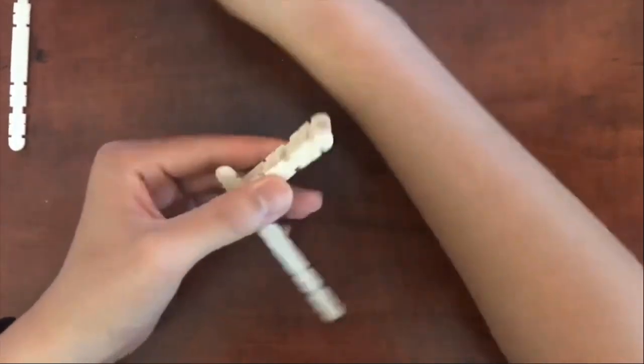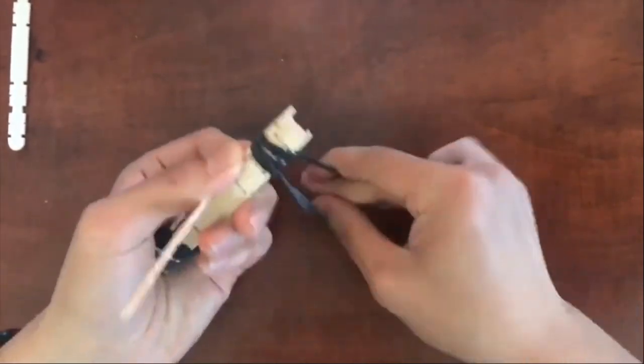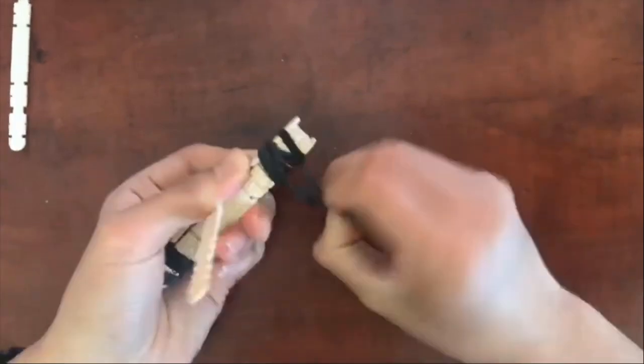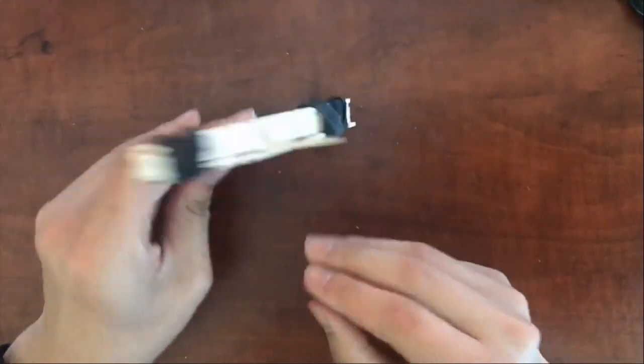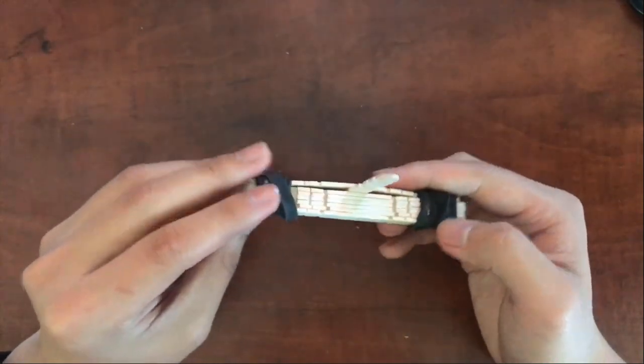Next, we're going to take another rubber band and we're going to secure the other side, just like so. If you need an adult's help, please ask your parents. Alright, so now we should be left with a structure that kind of looks like an airplane, with really, really fat wings.